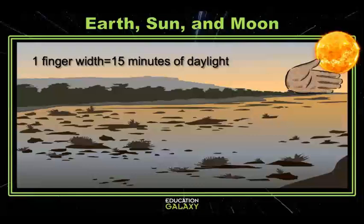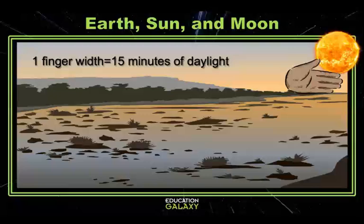Each finger counts as 15 minutes, so if there's four fingers between the Sun and the horizon, you can guess that there's about one hour until sunset.